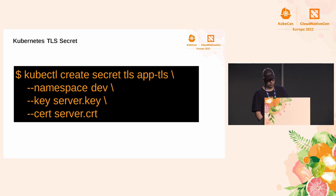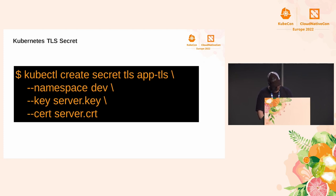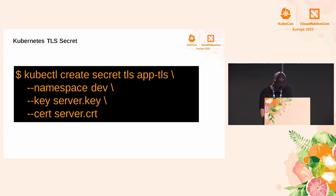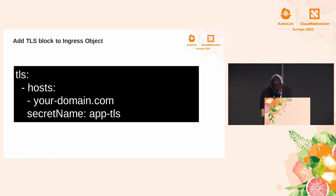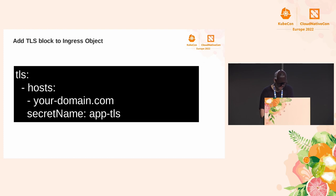With the following command we can create a Kubernetes Secret with a server certificate. We need to first generate the server.crt certificate and the server.key private key file. Once these files are generated we can use this command to create the Kubernetes Secret. The ingress resource with TLS needs to be created in the same namespace where the application has been deployed.